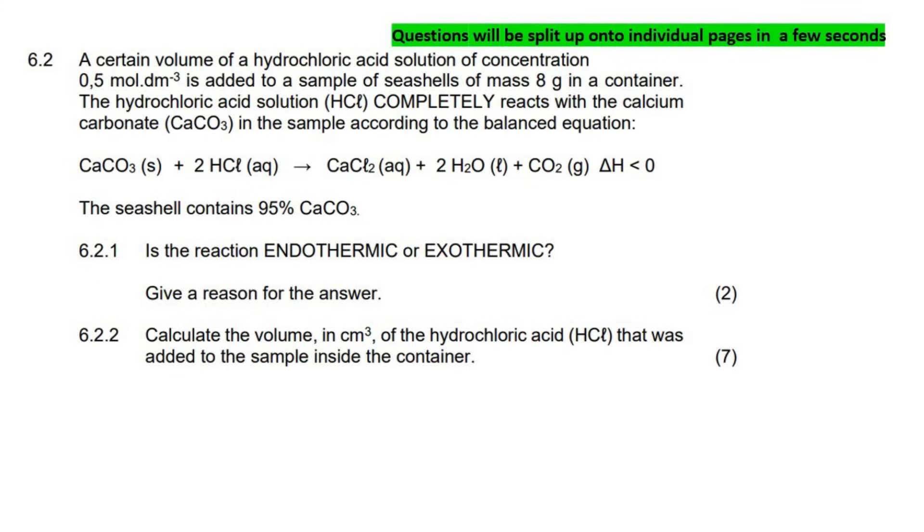A certain volume of hydrochloric acid of concentration 0.5 mol dm⁻³ is added to a sample of seashells of eight grams. The hydrochloric acid completely reacts with the calcium carbonate, so the HCl gets used up completely, according to the balanced equation. Now think about this carefully, you've got some seashells.